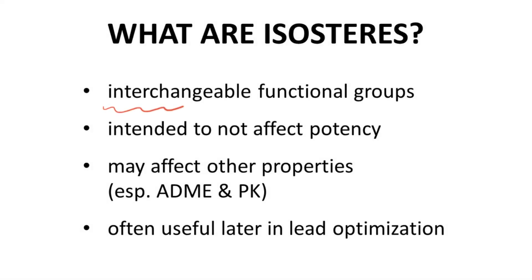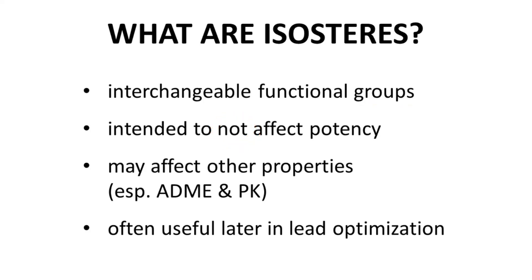Isosteres are interchangeable functional groups. When one isostere is swapped for another, the effect on potency is usually very small, but the impact on other properties — especially ADME properties or PK — can be much larger. Isosteres are most often considered later in lead optimization, especially when potency is satisfactory but ADME properties need improvement, and the changes required to fix the ADME problem may impact key drug target binding features.